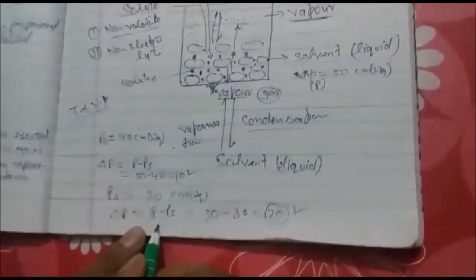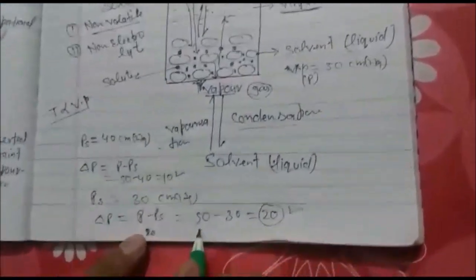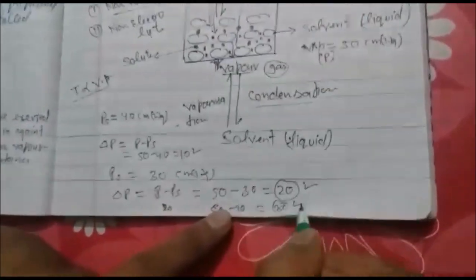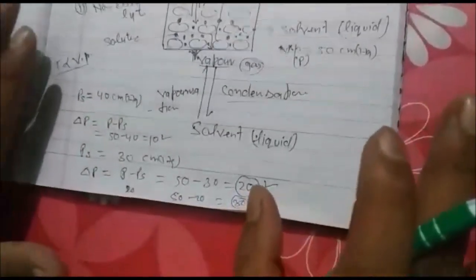If you again put the solute, vapor pressure again decreases, let 20. Then 50 minus 20, 30. So this is lowering in vapor pressure which is a colligative property.